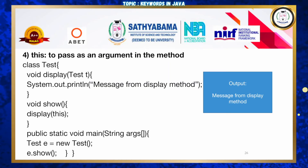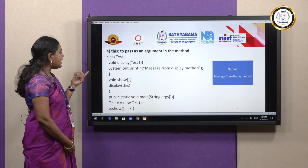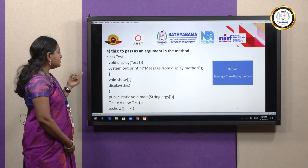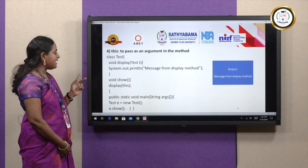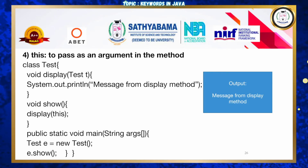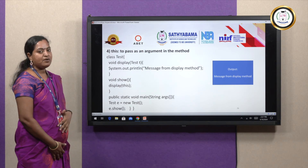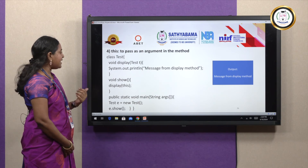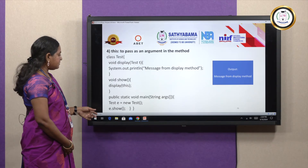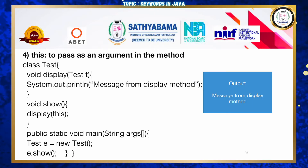Fourth use — 'this' to pass as an argument in a method. In class Test with a display method, and class Display with display and show methods, one method accepts a Test class object. Inside, 'this' is passed as the argument when calling the method. In the main method the show method is called directly, producing the output 'display message from the display method'.